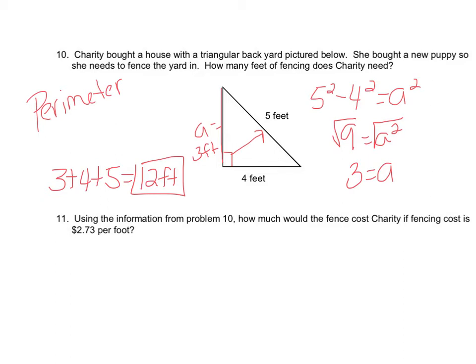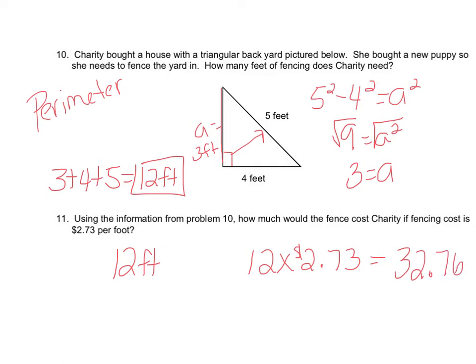Using the information from problem 10, how much would the fence cost Charity if fencing costs $2.73 per foot? We know we need 12 feet, so we multiply: 12 times $2.73. Plug that into your calculator and you get $32.76. We multiplied because we want to find the cost per foot.